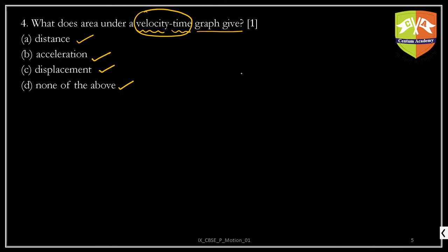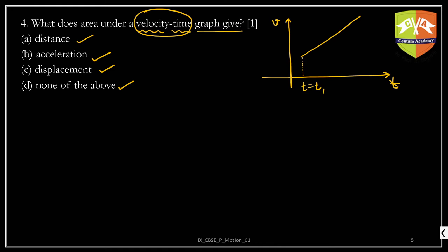Let us first draw the graph. This is the x and y coordinate axis, where x is time t and y is velocity. This is what a velocity time graph looks like. Let's say the graph has values where at t equals t1, the body was moving with velocity v1, and at t equals t2, the body had velocity v2.